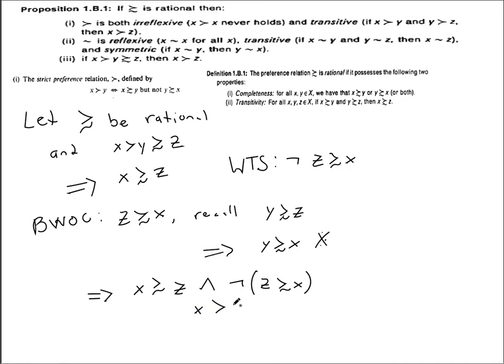Which is just the definition of x being strictly preferred to z. So that's what we were trying to prove, x is strictly preferred to z, and we're done.